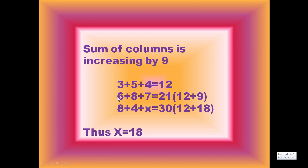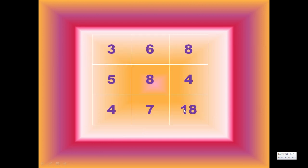Then 6 plus 8 plus 7 equals 21, that is 12 plus 9. Again, 8 plus 4 plus x equals 30, which is 12 plus 18, so the value of x equals 18. So the possible value of x is 18. We put this value. This is our second logic.